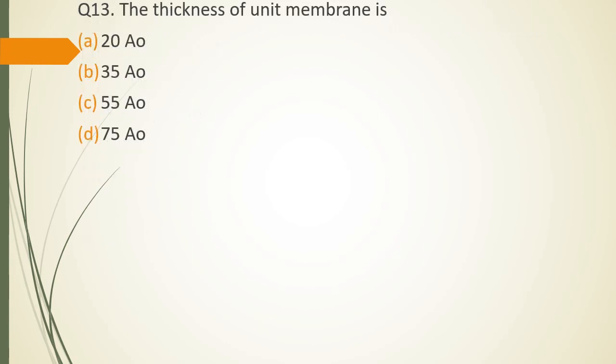Question No. 13: Thickness of a unit membrane is 20 Angstroms, 35 Angstroms, 55 Angstroms, or 75 Angstroms. Thickness of a unit membrane is? The correct answer is option D, 75 Angstroms.